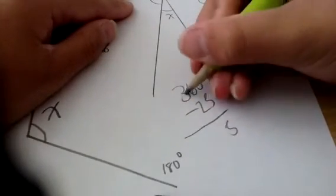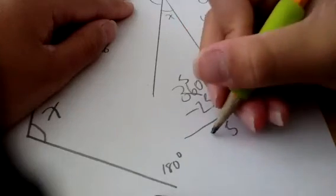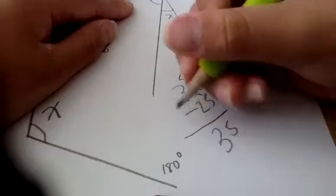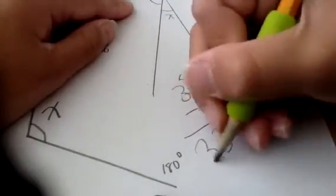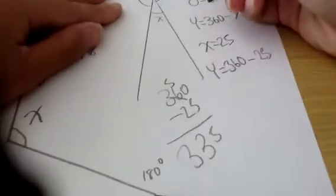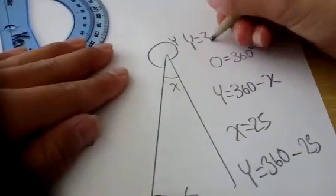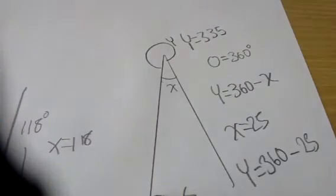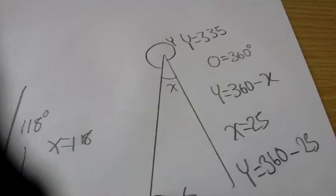And this one goes down, so y equals 335.